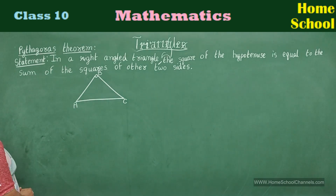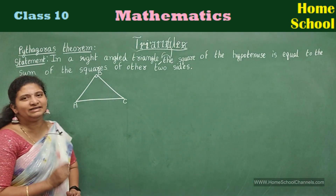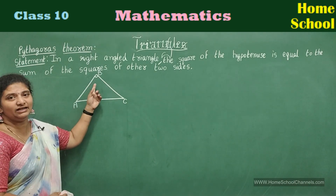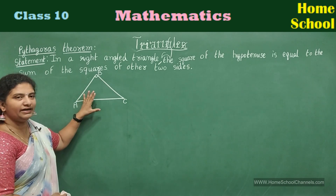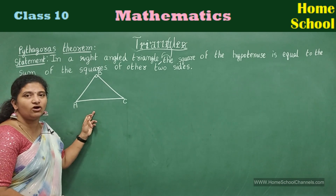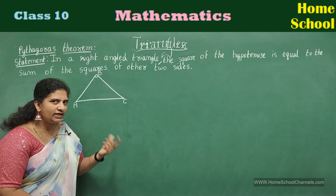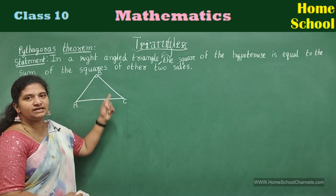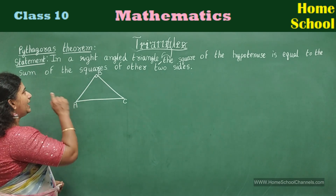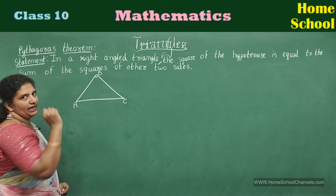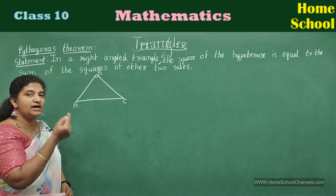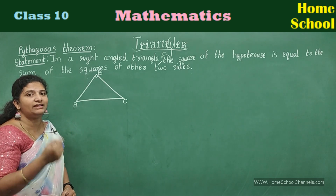You can look at the statement over here. In a right angled triangle — and you can see the right angled triangle — one angle is 90 degrees. This is a right angled triangle. The right angle's opposite side is called the hypotenuse, and this is the longest side. ABC is a right angled triangle, right angled at B. In a right angled triangle, the square of the hypotenuse is equal to the sum of the squares of the other two sides.